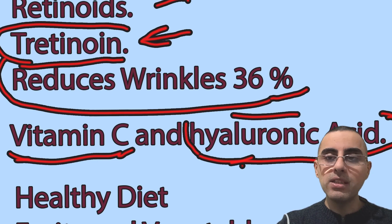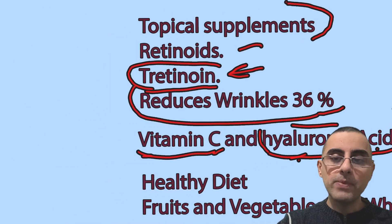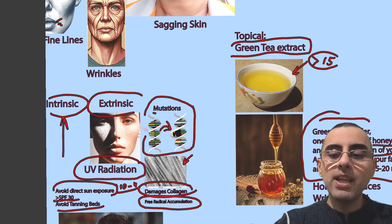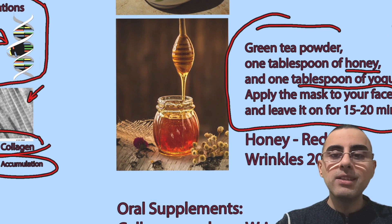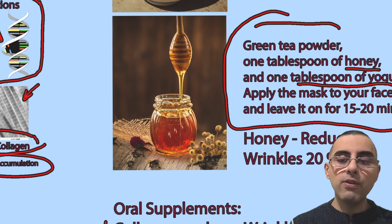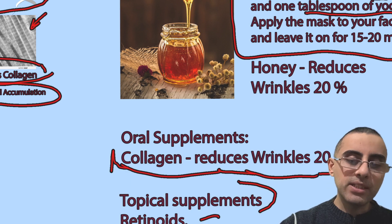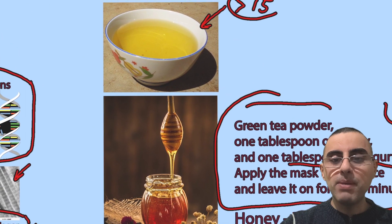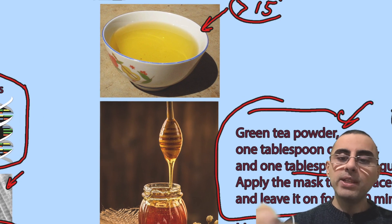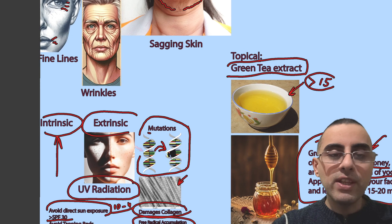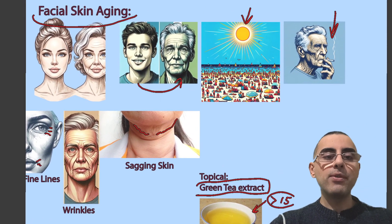A healthy diet is also important — fruits, vegetables, and whole grains are full of vitamins and minerals and help with skin hydration. To summarize: the most evidenced supplement is collagen. For topical creams, vitamin C is very good and tretinoin is the best. For home remedies, the best is green tea powder with one tablespoon of honey and one tablespoon of yogurt applied to the skin for 15 to 20 minutes.